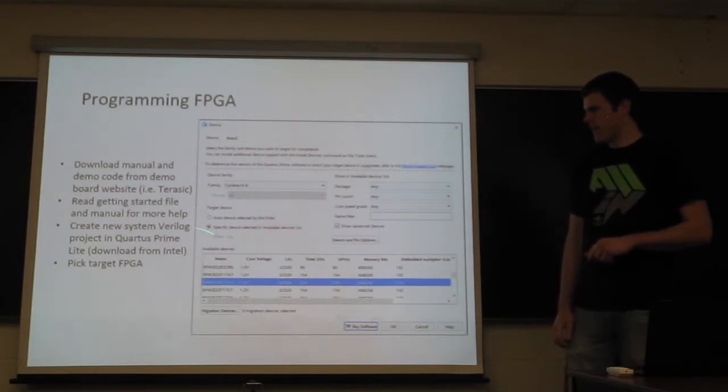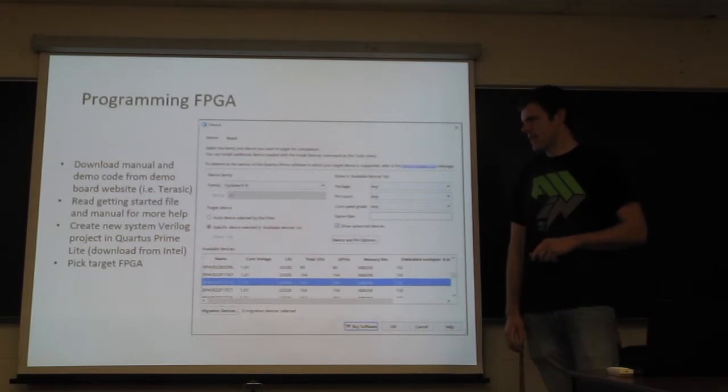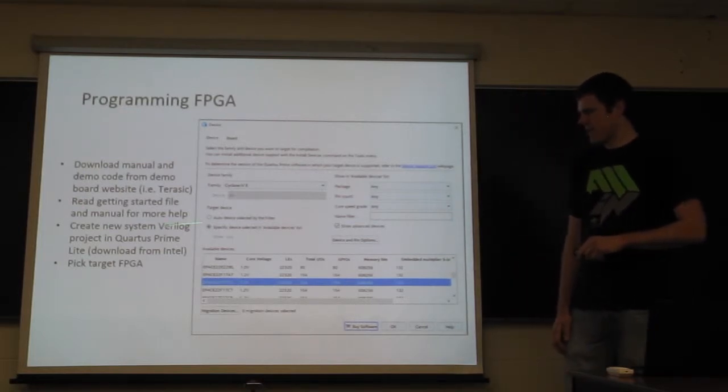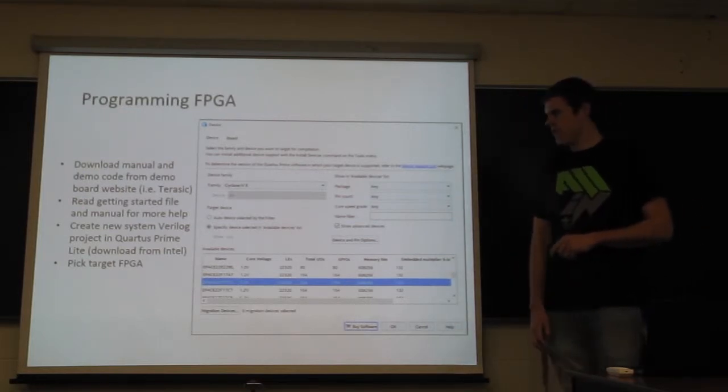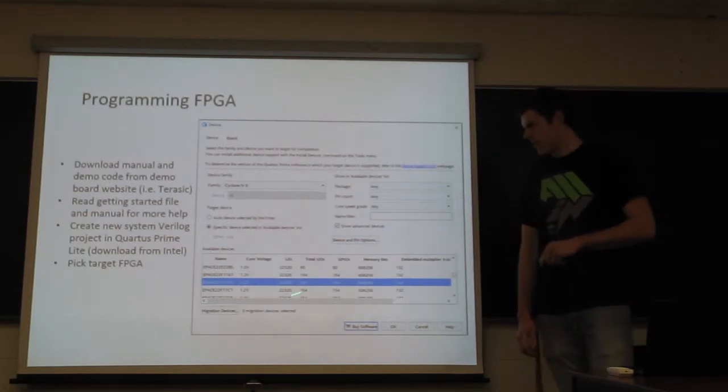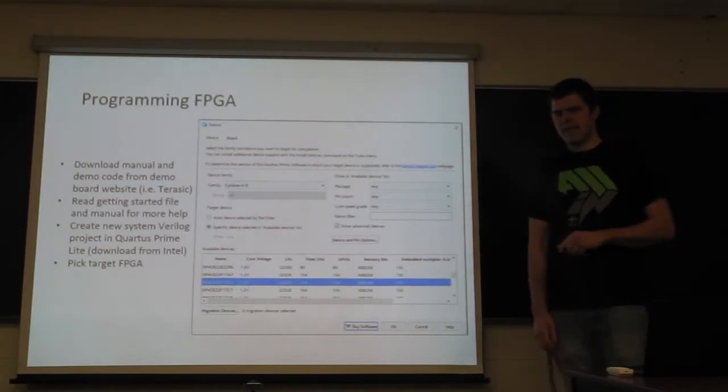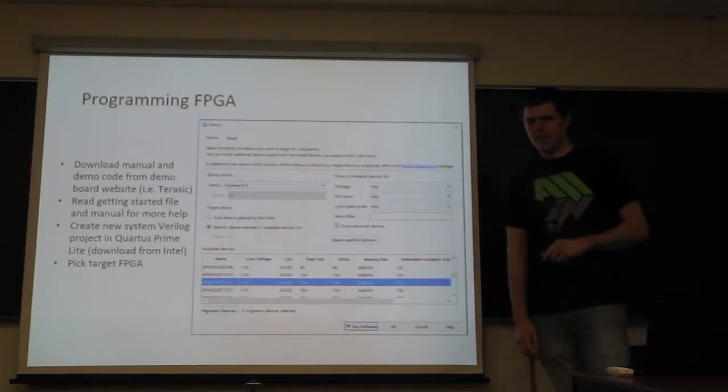And then also, you're going to need the programming development environment. In this case, for using an Intel FPGA, we use Quartus. So after you go through the instructions to create your project, you're going to need to make sure to pick the right FPGA. And this is written on the FPGA and will be in the manual and such.